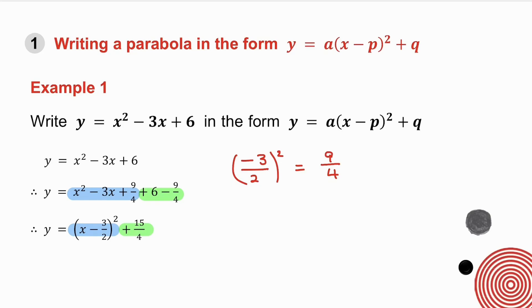We can immediately get the turning point of the parabola. The x value at the turning point is 3 over 2 and the y value is 15 over 4.